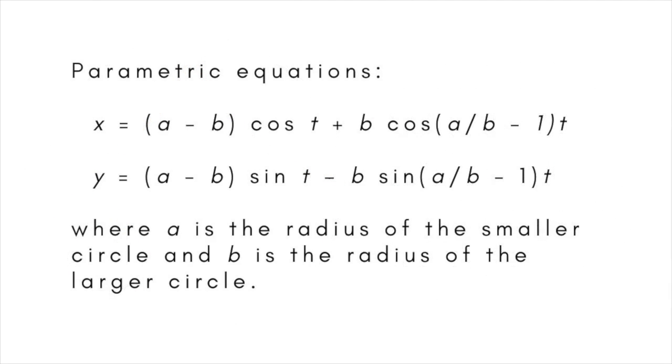If the smaller circle has radius a and the larger one has radius b, the parametric equations for a hypocycloid can be written as follows: x equals (a - b) cos t plus b cos(a/b - 1)t, and y equals (a - b) sin t minus b sin(a/b - 1)t.